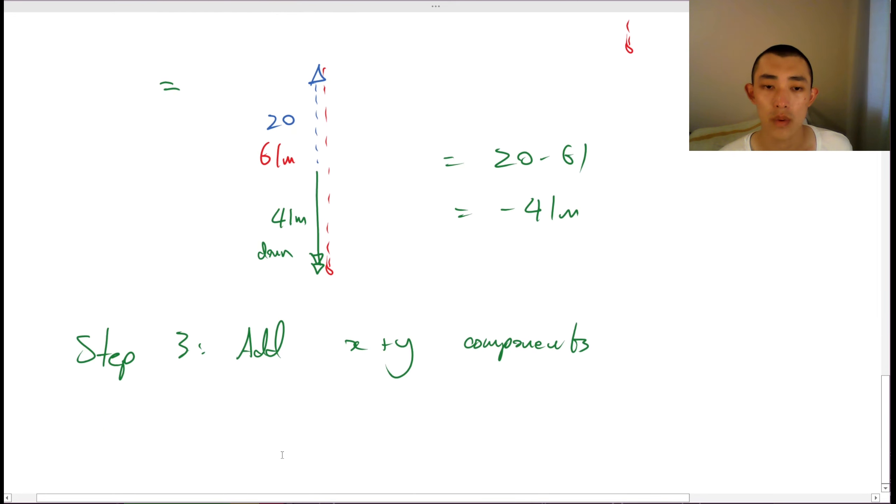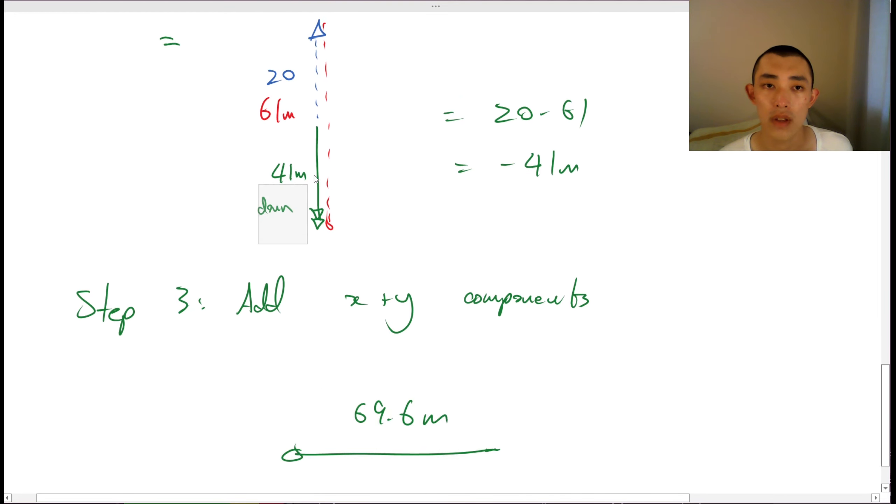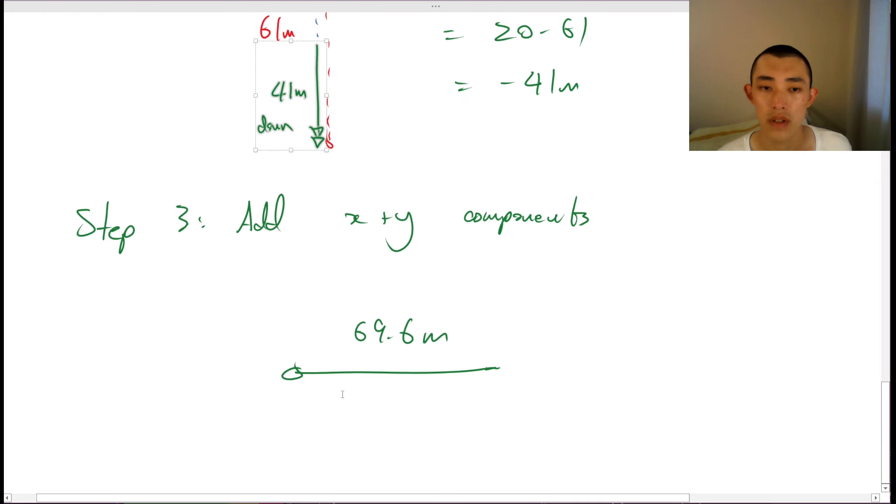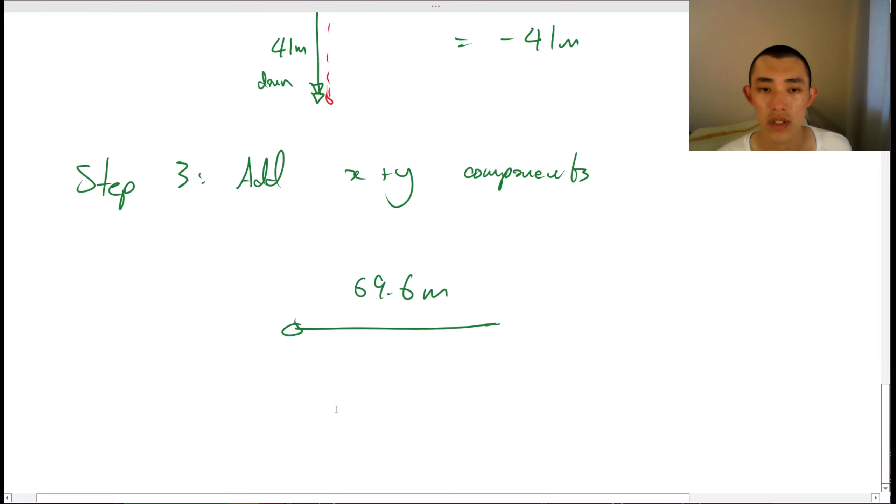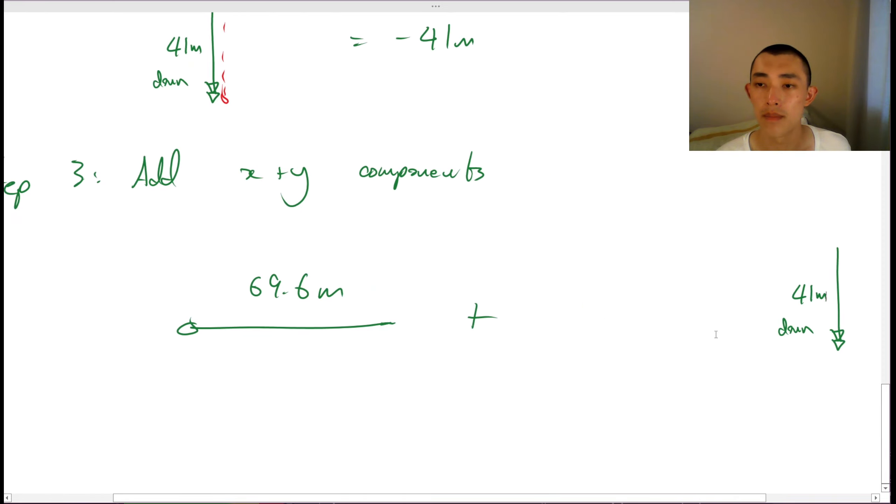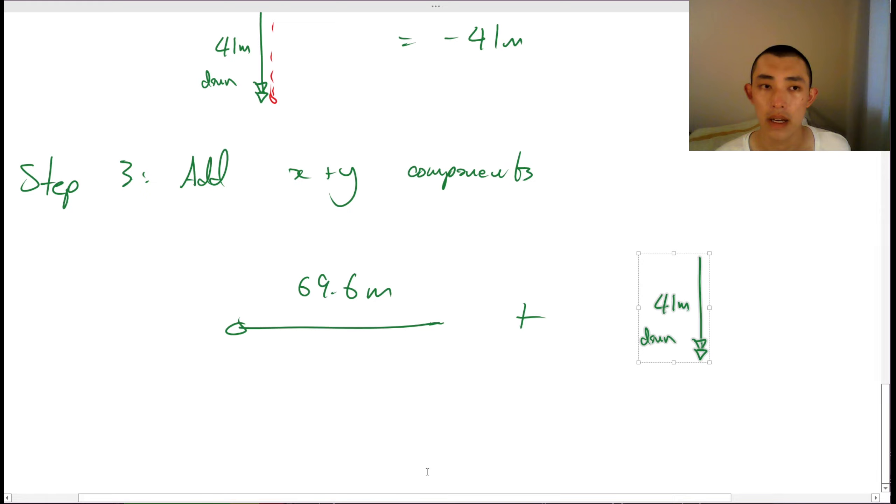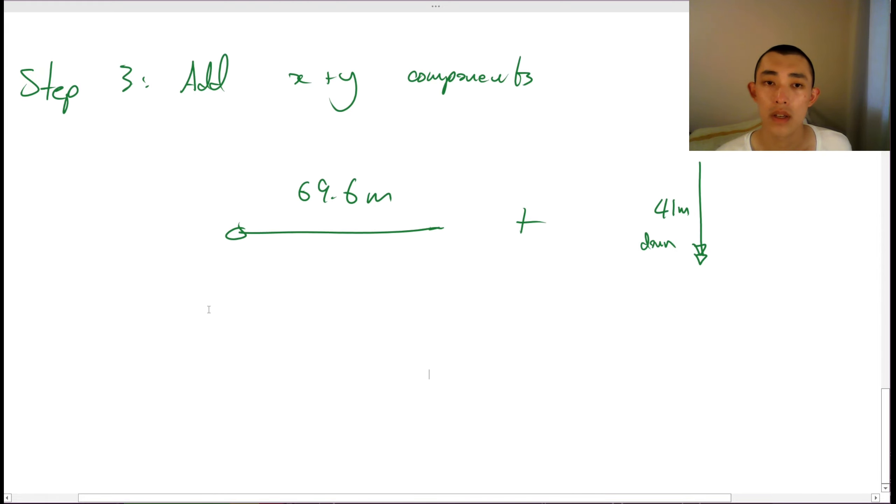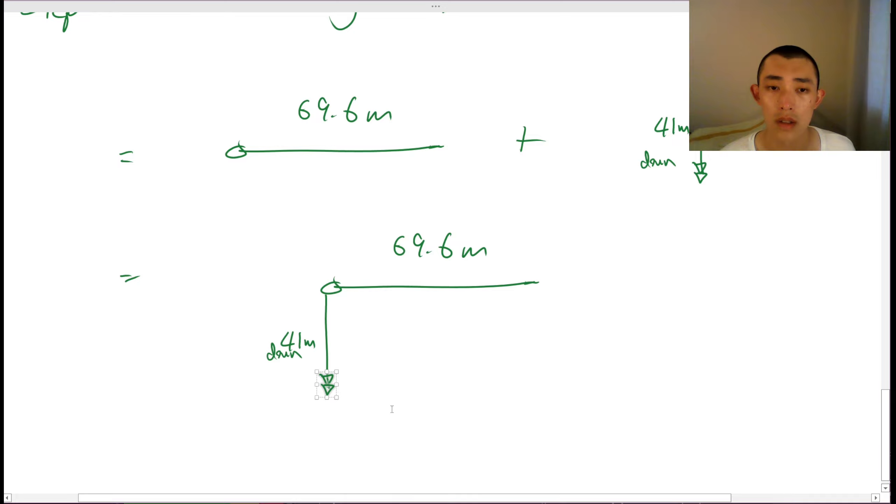So let's add these components together. So we have 69.6 meters towards the left and then we have another 41 meters down. So again, we add them tip to tail, just like we do when we add perpendicular vectors. So then what we have, we have it like this. And then we want to do like this.